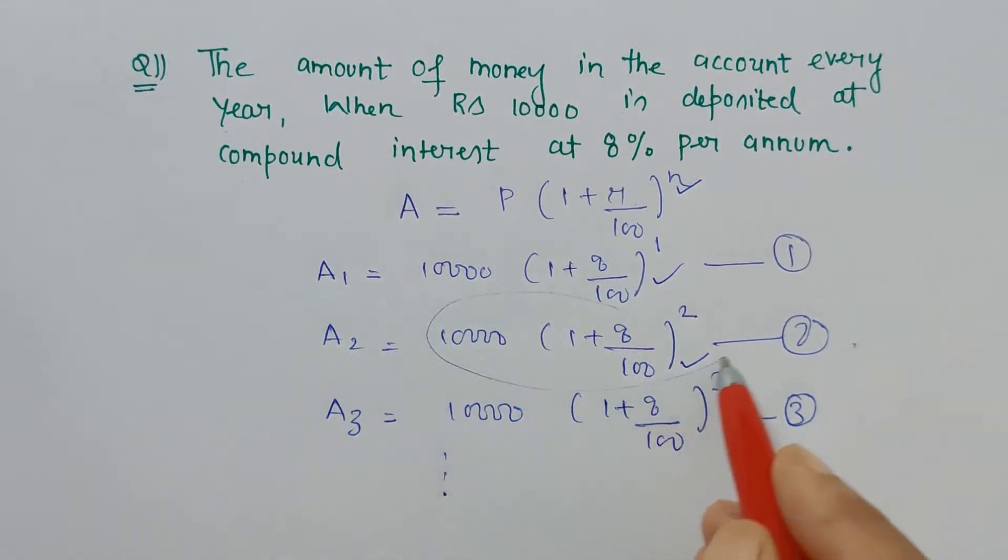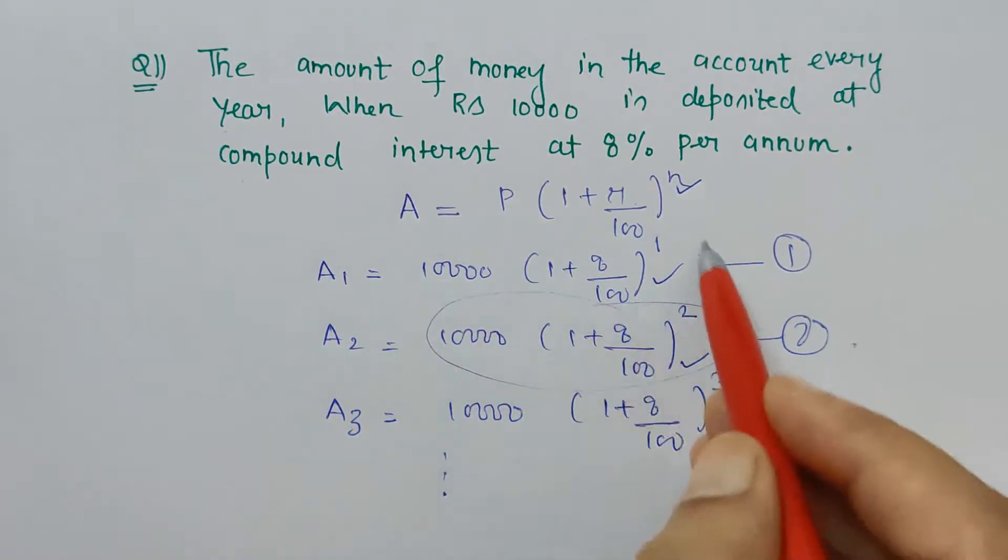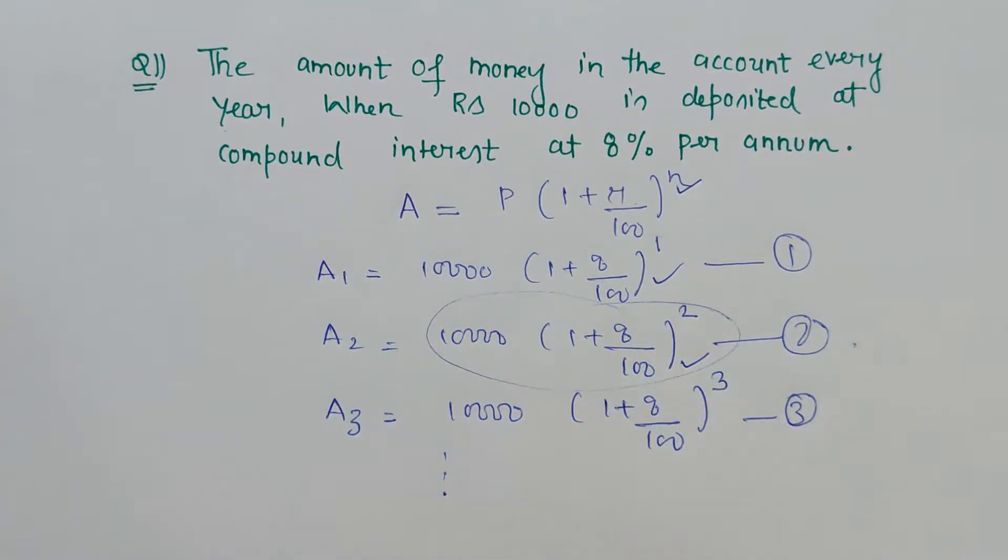And when you see equation 2 minus equation 1—or exactly it is not an equation, we are only subtracting the second year amount minus first year amount—there will not be any common difference.